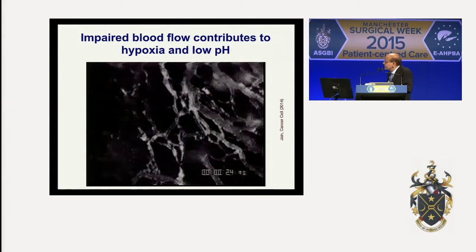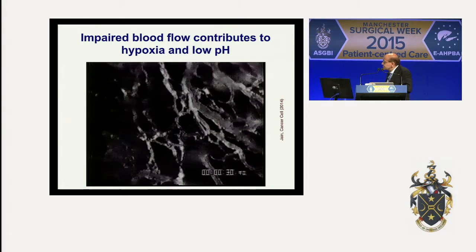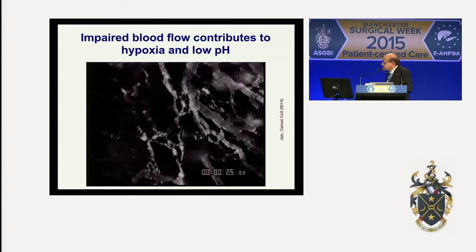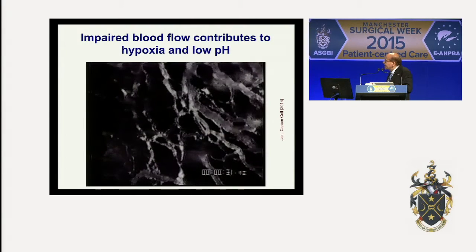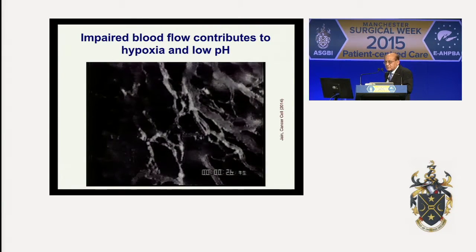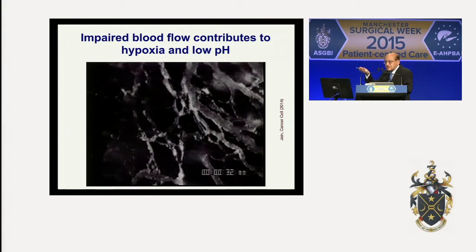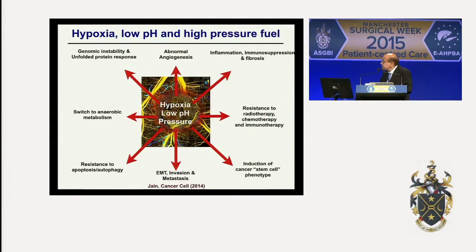At higher magnification, some regions of the tumor appear to have no blood vessels, but CD31 staining reveals vessel density is actually the same throughout. The reason we cannot see these vessels is that blood flow is shut down in those regions. As a result, those regions become hypoxic and the pH becomes acidic. In addition, these blood vessels are fairly leaky and unable to contain hydrostatic pressure, which transmits from inside to outside the blood vessel and raises the interstitial fluid pressure in tumors.